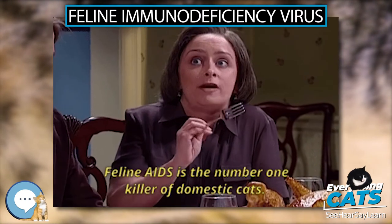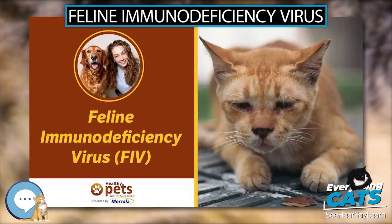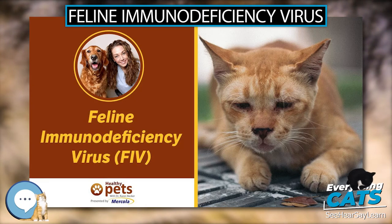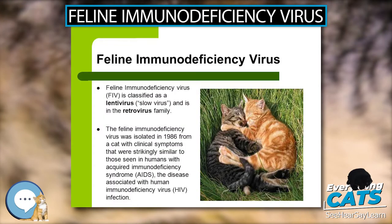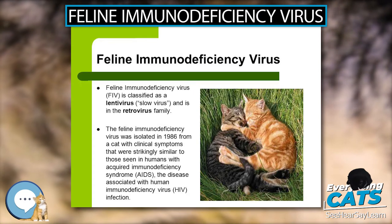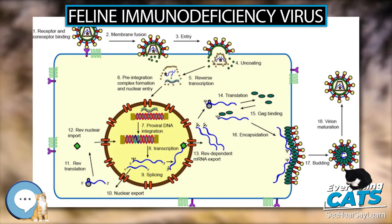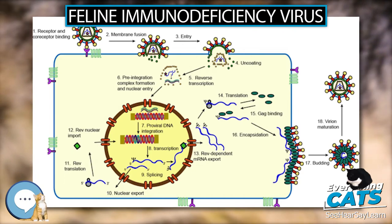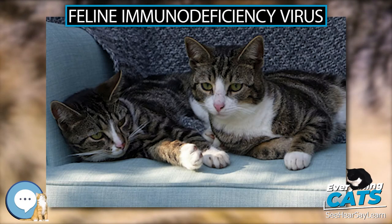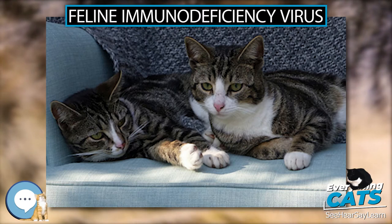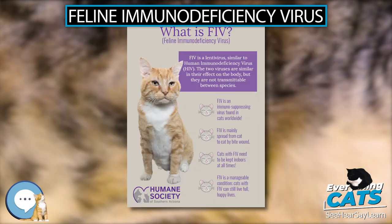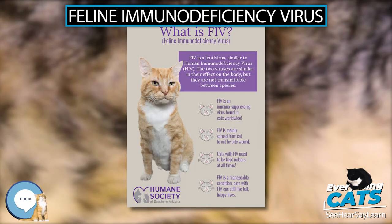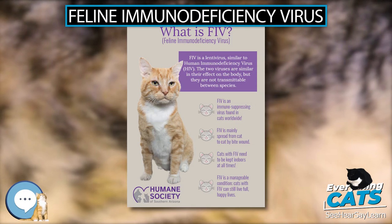CD134 is predominantly found on activated T cells and binds to OX40 ligand, causing T cell stimulation, proliferation, activation, and apoptosis. This leads to a significant drop in cells which have critical roles in the immune system. Low levels of CD4+ and other affected immune system cells cause the cat to be susceptible to opportunistic diseases once the disease progresses to feline acquired immune deficiency syndrome.